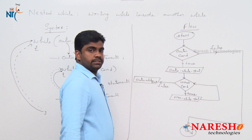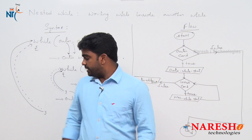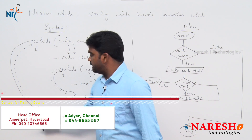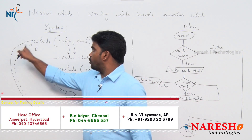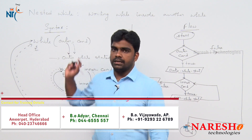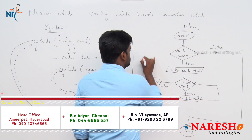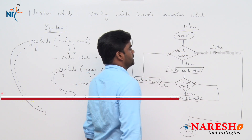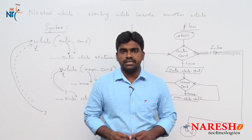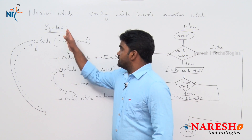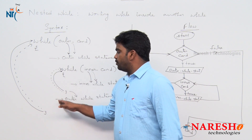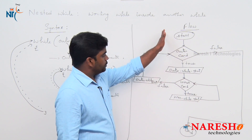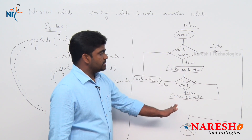After execution of outer while loop statements, again it goes and checks outer condition. So this is the syntax of nested while and this is the flow of nested while. Flowcharts are very important.